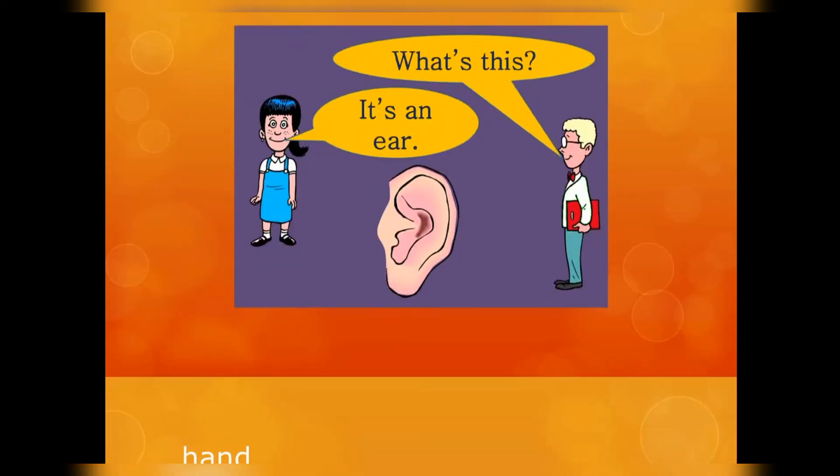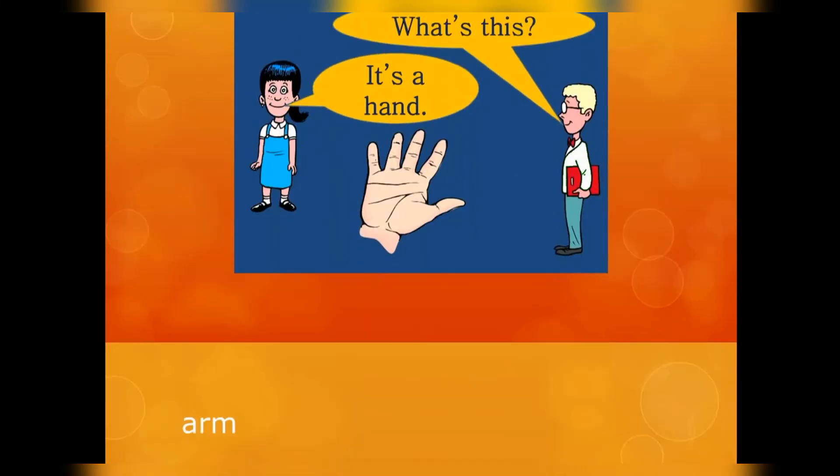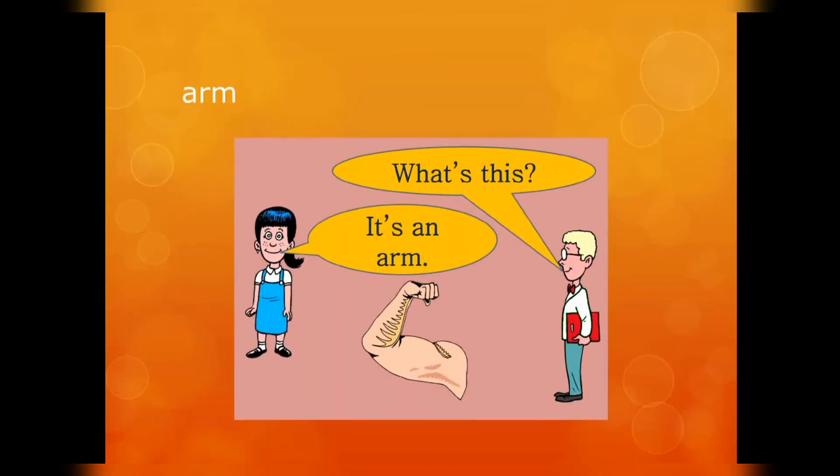Hand. What is this? It's a hand. We also use this in five senses. We can touch with the help of hands. Good. What is this? The boy is asking and the girl is saying it's an arm.